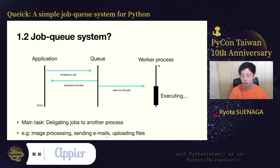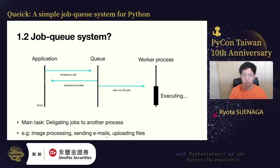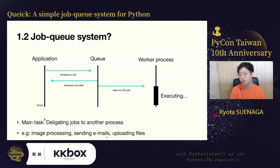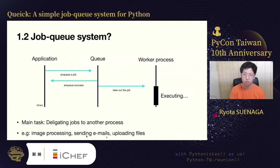This graph shows the event flow among application, queue, and worker process. The application enqueues a job to the queue, enqueue returns a response, and after that, the worker process obtains that job from the queue. The main task of a job queue system is to delegate jobs to another process — especially jobs that take too much time and have to be executed asynchronously, for example image processing, sending emails, or uploading files.